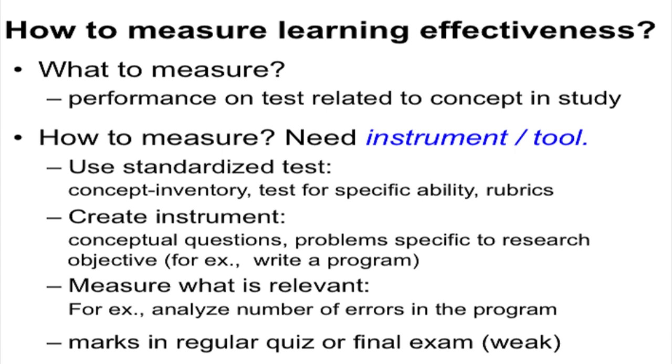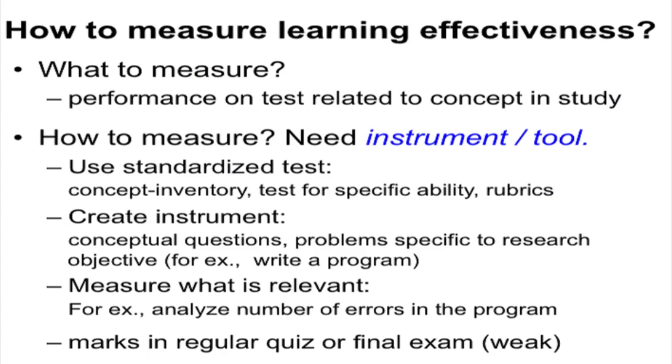What your measurement instrument must measure is what is relevant. For example, if you are trying to measure programming skills, you can analyze the number of errors in a program — you create an instrument where you ask students to write a program and analyze the number of errors. The measurement as well as the analysis must be consistent with the research objective. Marks from a regular quiz are fine if they address the research objective, but a university final exam might be a weak measurement instrument for your research study if it covers topics beyond your objective.